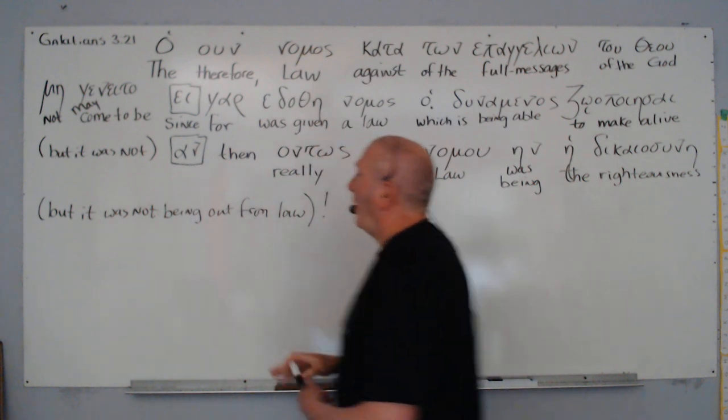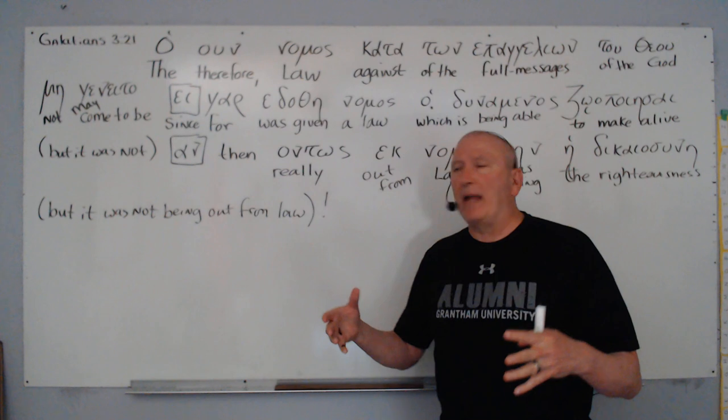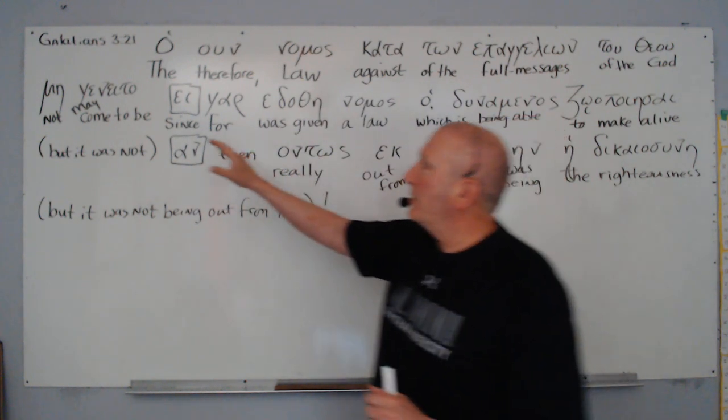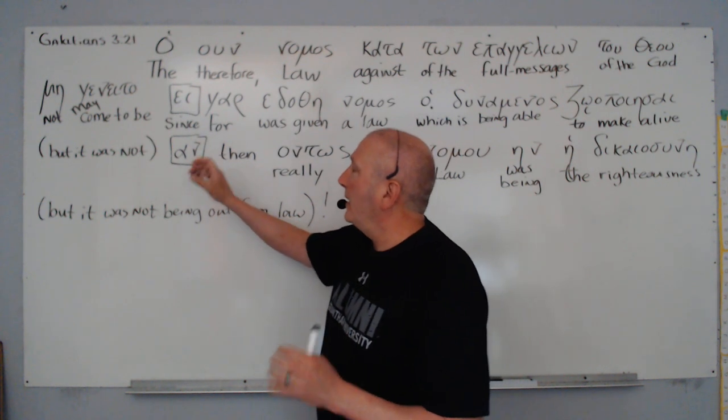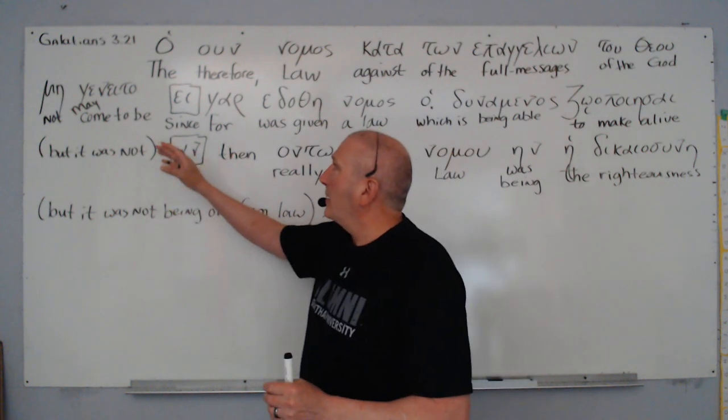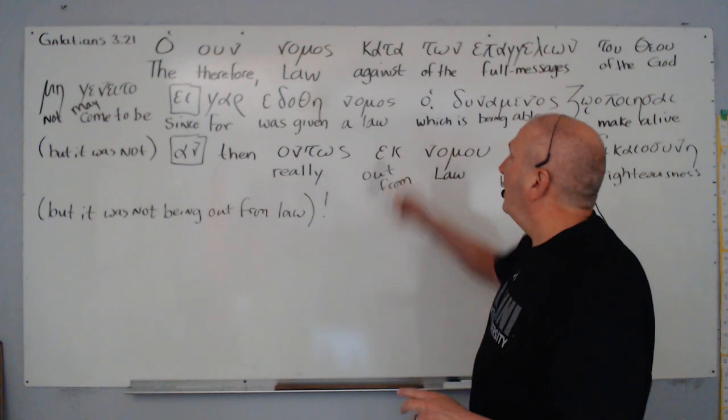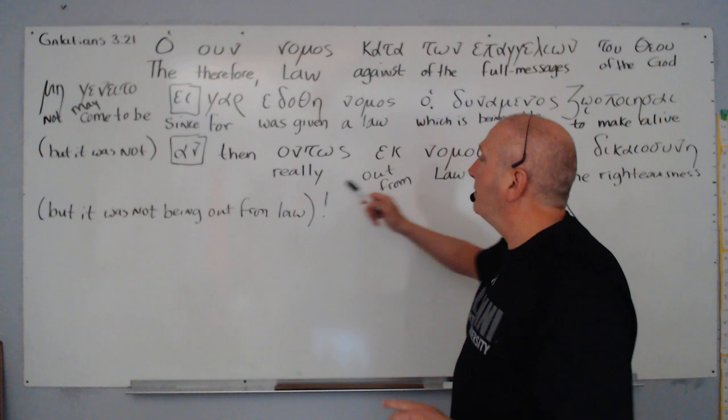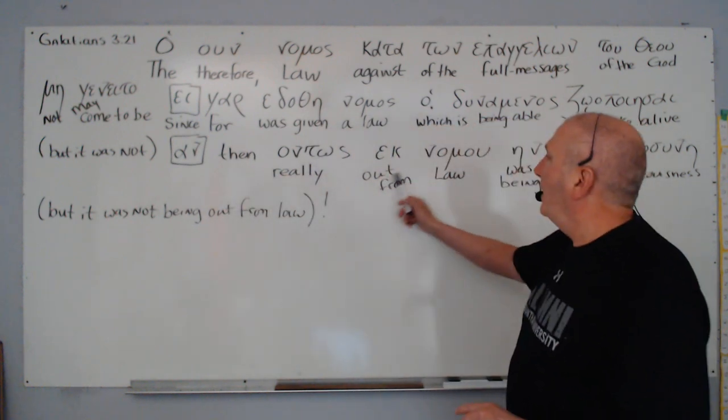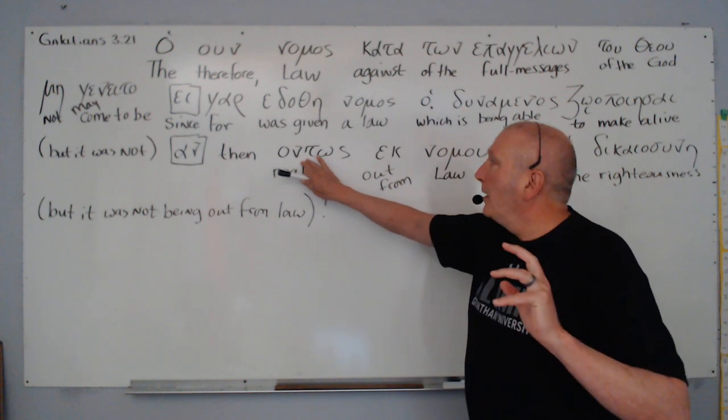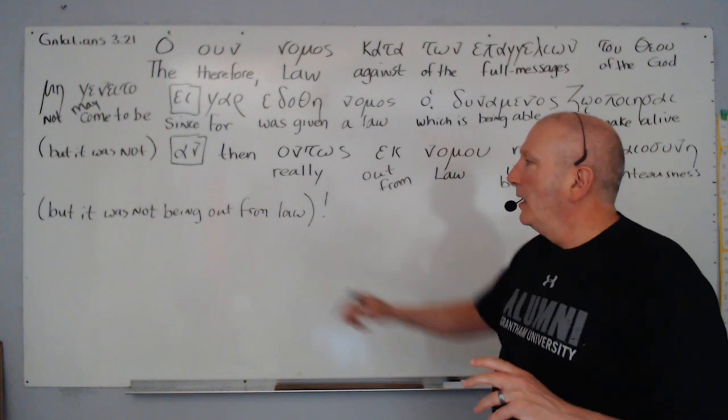So, Paul makes it quite unassailable in his argument. Specifically, he worded it so precisely and so wordy. We say the Quante text is highly inflected, but it's very wordy. So if you bother to go through it, you'll notice that he's inspired by the Holy Spirit. He's writing. His letters are scripture. And the Holy Spirit communicated this wish, this declaration, that may it not, may the law therefore, conclusion from a previous argument, may the law therefore not come to be against the promises, the full messages of the God. For since a law was given which is being able to make alive, but it was not. Then really, and that's where we get our word on, like an ontological argument. It speaks of the nature of reality and the way things really are. So really, out from law, the righteousness was being, but it was not being out from law.